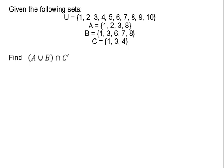So in this problem we are given a universe of the numbers 1 through 10 and we're given three sets. From that we want to find (A union B) and then intersect that with C complement.